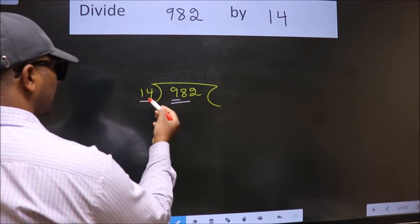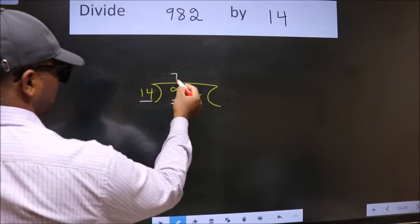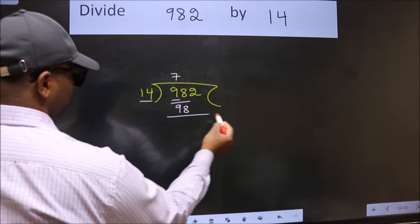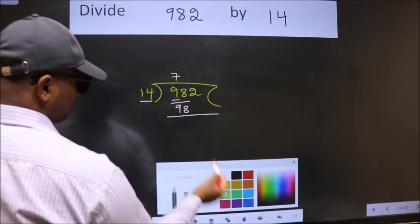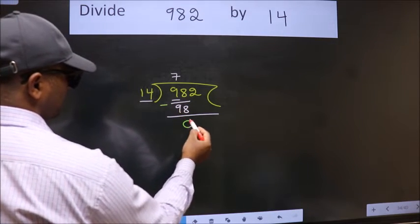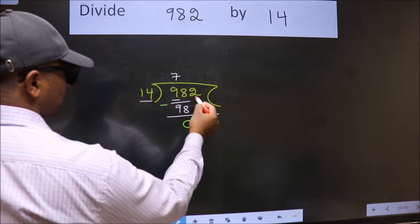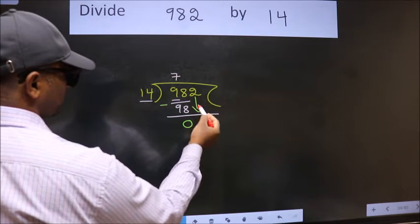When do we get 98 in 14 table? 14 times 7 is 98. Now we should subtract. We get 0. After this, bring down the beside number. So, 2 down.